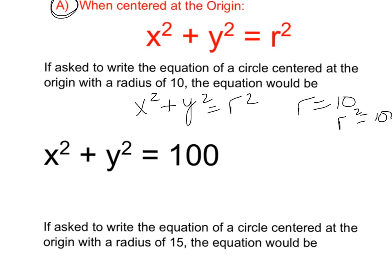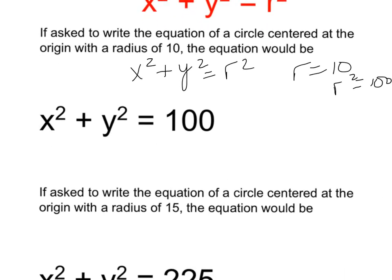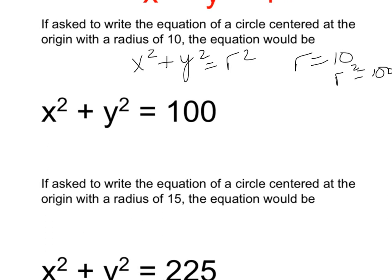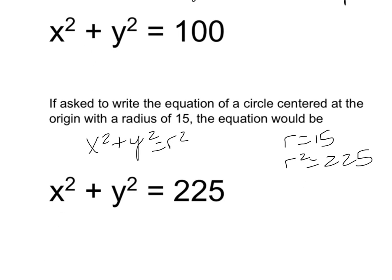If asked to write the equation of a circle centered at the origin with a radius of 15, first write the circle equation: x squared plus y squared equals r squared. Since r equals 15, r squared equals 225, so the equation of the circle is x squared plus y squared equals 225.